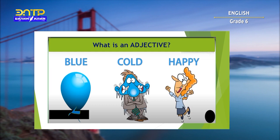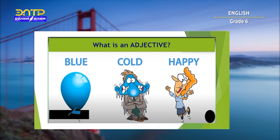Before starting, I have a question for you. What do you know about adjectives? Do you know what an adjective means? Where and how do we use it? Today I will explain it. Blue, cold, happy are adjectives. So, adjectives are describing words. An adjective gives more information about something. An adjective generally describes a noun. A noun is a person, a thing, or a place.